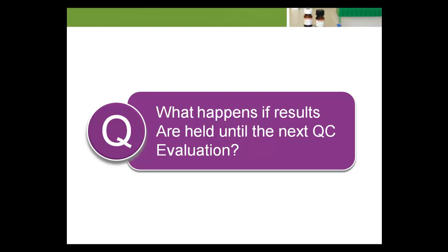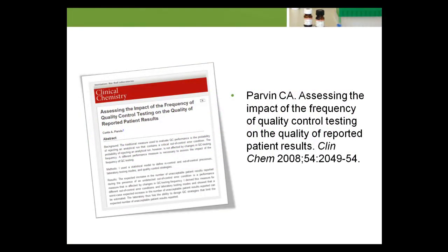The number of patient specimens tested between QC evaluations should be selected so that the expected number of unreliable patient results produced during an undetected test system failure is no larger than the tolerable threshold. We have published one possible approach to systematically determining limits on the number of patient specimens that can be tested between QC evaluations to control the expected number of unreliable patient results reported during the existence of an undetected test system failure.